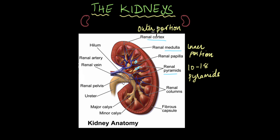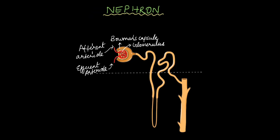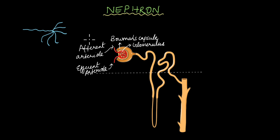The renal cortex is the outer portion and the renal medulla is the inner portion. The cortex is uniform throughout the kidney, but the medulla is interspersed with these medullary pyramids. Now, let's talk about the functioning unit of the kidneys — the nephron. Each nephron is fed by a single afferent arteriole. The renal artery that enters the kidney splits into smaller and smaller arterioles, which make up the afferent arteriole.